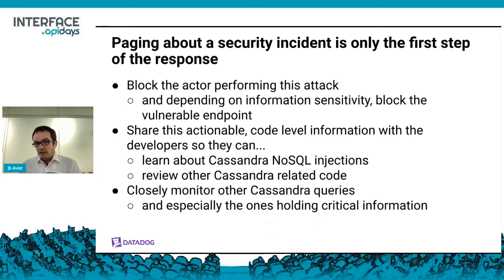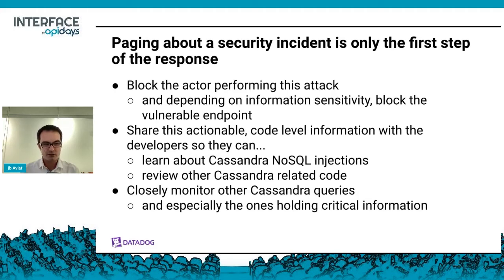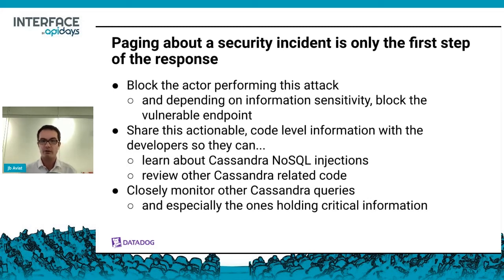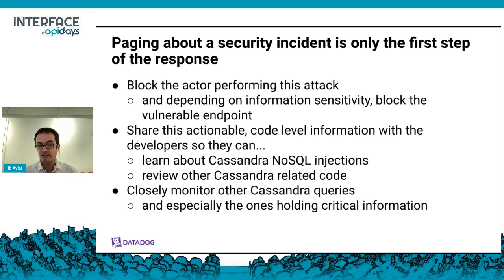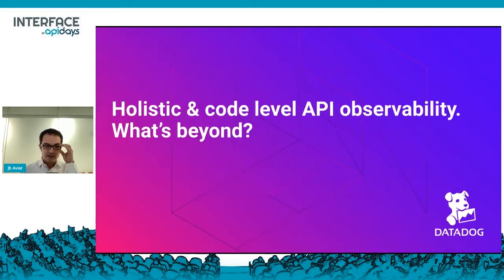But do we want to wake up the security team, wait for them to boot their phones, and do whatever they need to? No — we can automatically block the actor performing this attack. Maybe block the vulnerable endpoint. Maybe we want to share this actionable, code-level information with the developers so they can learn about NoSQL injections and review their other NoSQL code. And we want to closely monitor the other Cassandra queries, especially those connected to sensitive data stores. That's holistic, code-level API observability — but what's beyond that?